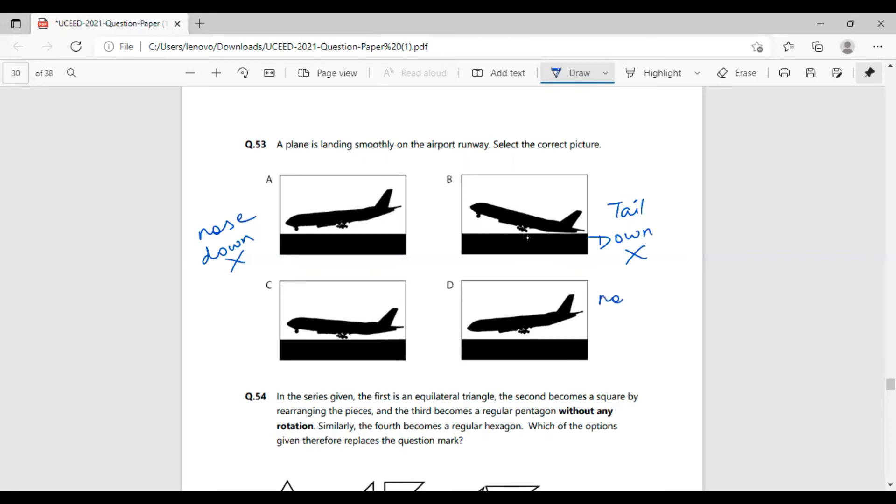In the fourth option, part D, we have the nose down, but we don't have the front landing gear deployed, which is clearly not the correct way to land a plane.